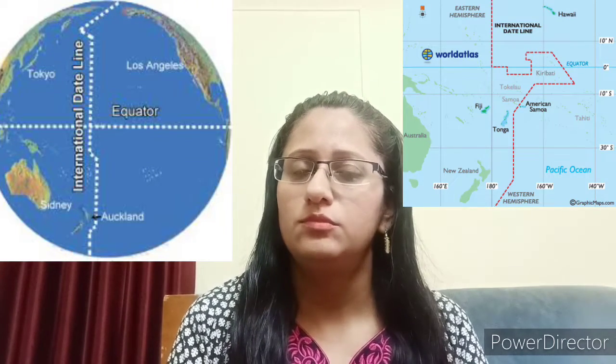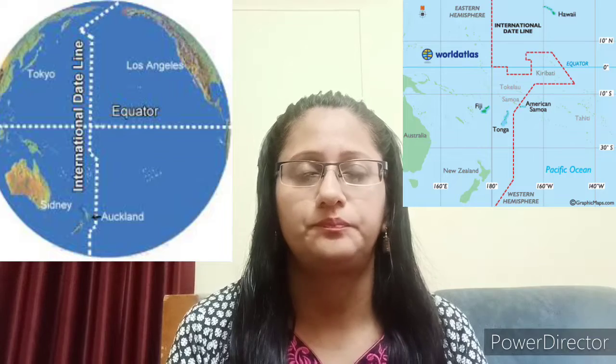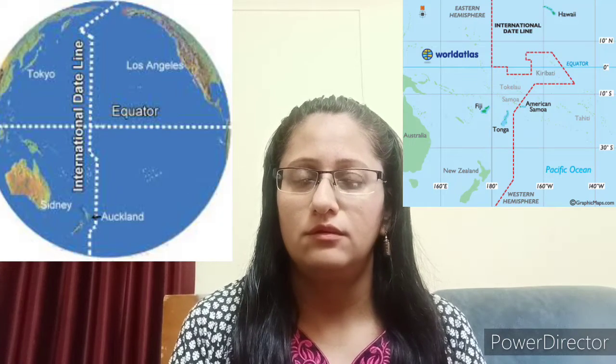Any traveler who crosses that line will experience a change of calendar date. An important question is: why is the International Date Line placed just opposite to the prime meridian? It is placed there because it passes through the Pacific Ocean, and if you observe a map or a globe, you will see that it covers the maximum ocean area.